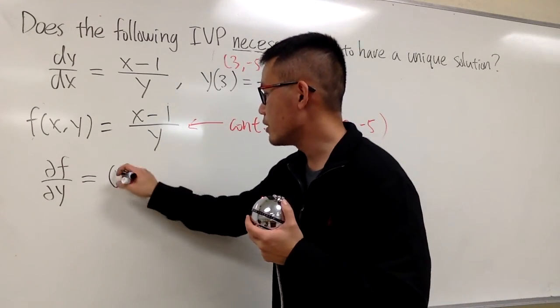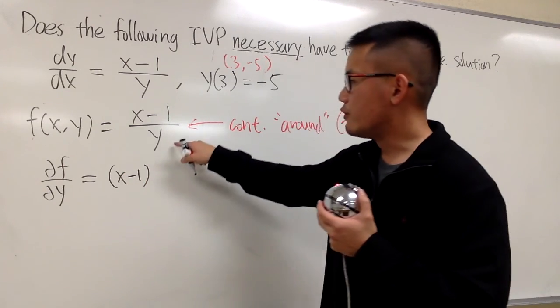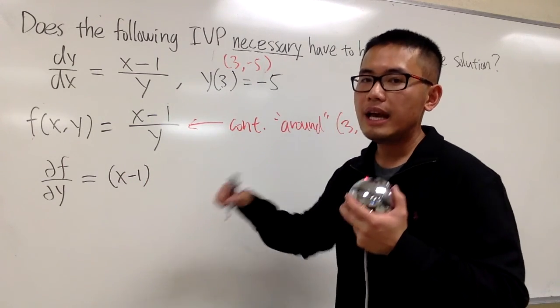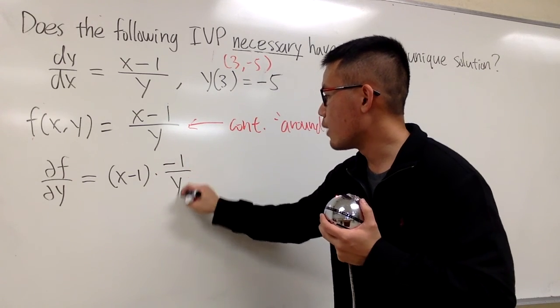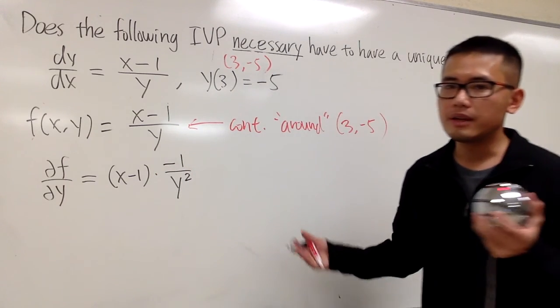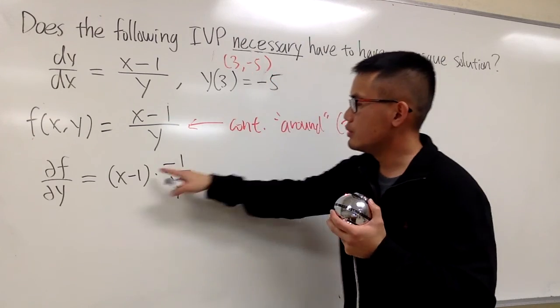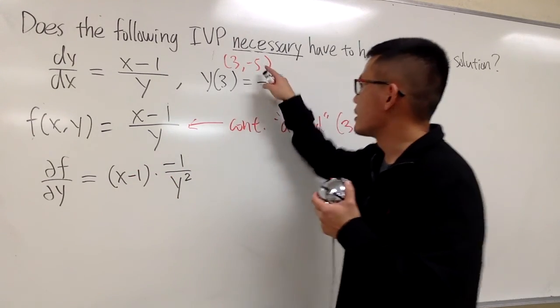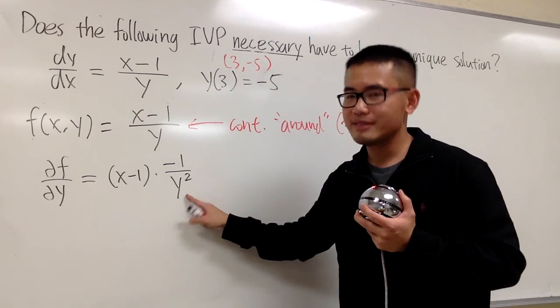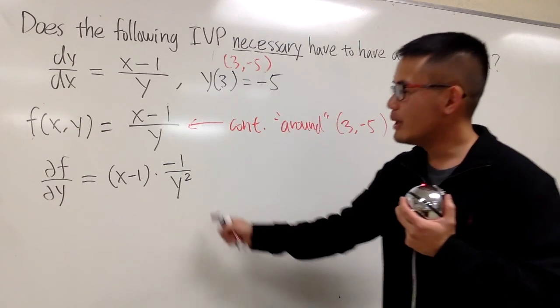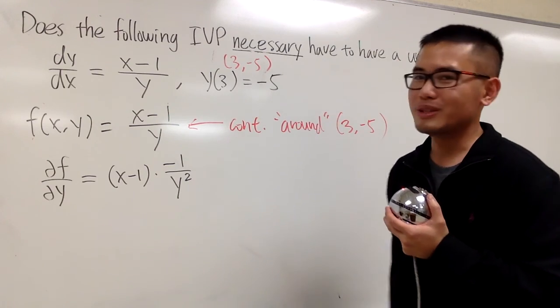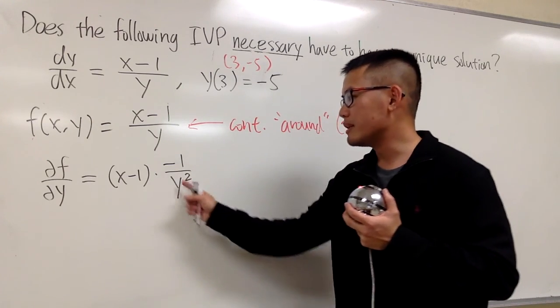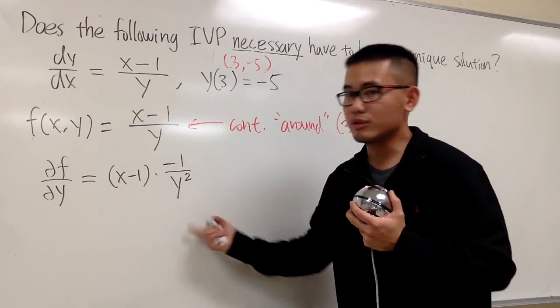Let me put that down. ∂f/∂y, this will be... x-1 will be considered a constant, so let me put it down right here. And we will differentiate 1/y. And the derivative of 1/y is -1/y². And now, you see, if you plug in 3 into x, this is good. Plug in -5 into y, this is also good. Everything together, nothing goes wrong.